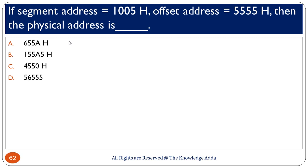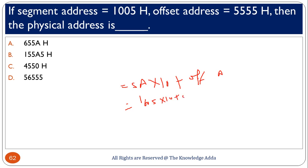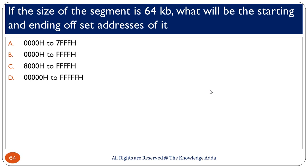If the segment address and offset address are given, the physical address can be calculated using the formula: physical address = segment address × 10 (hex) + offset address. For example, with segment 1005 and offset 5555, you multiply and add to get the physical address. The correct output is option B. If the size of a segment is 64 KB, the starting and ending offset address for 16 bits gives option D as the correct answer.